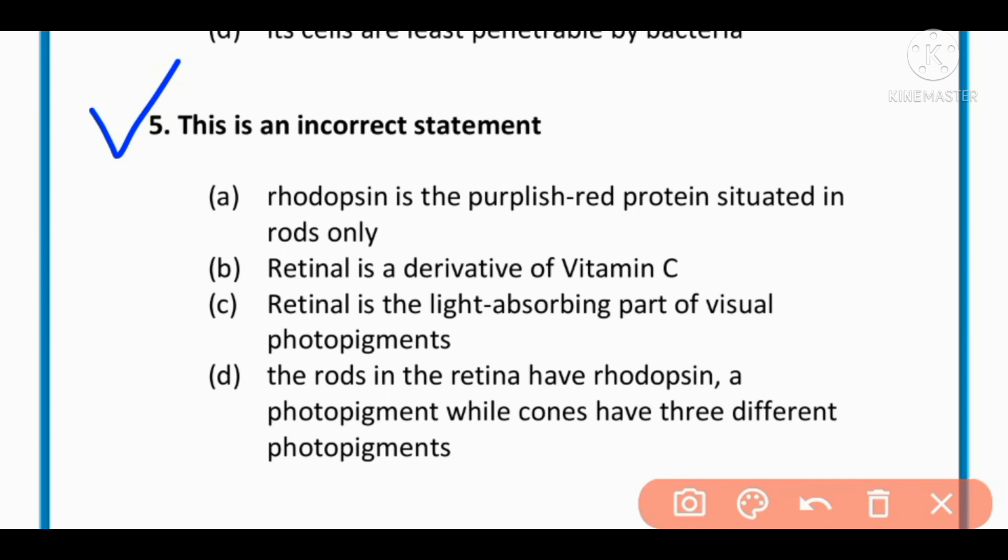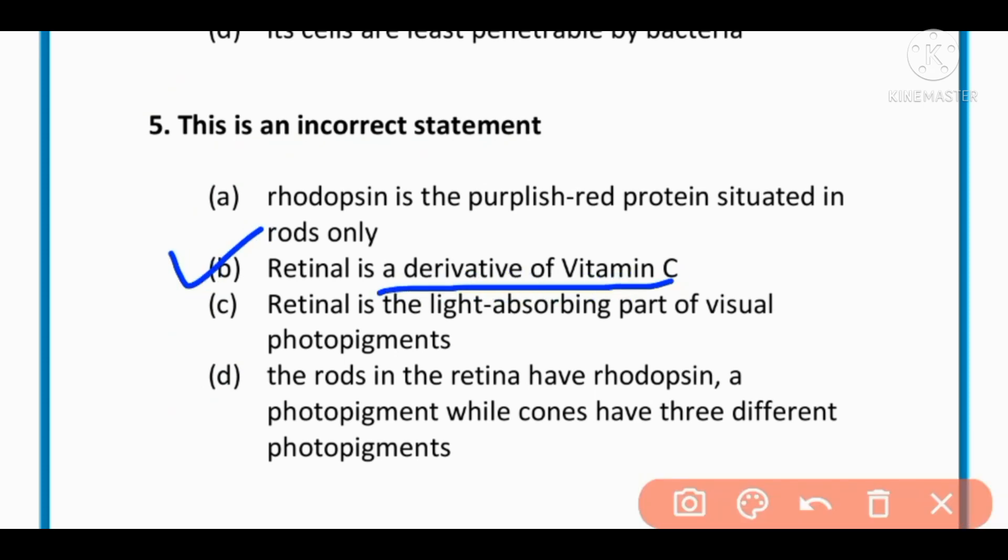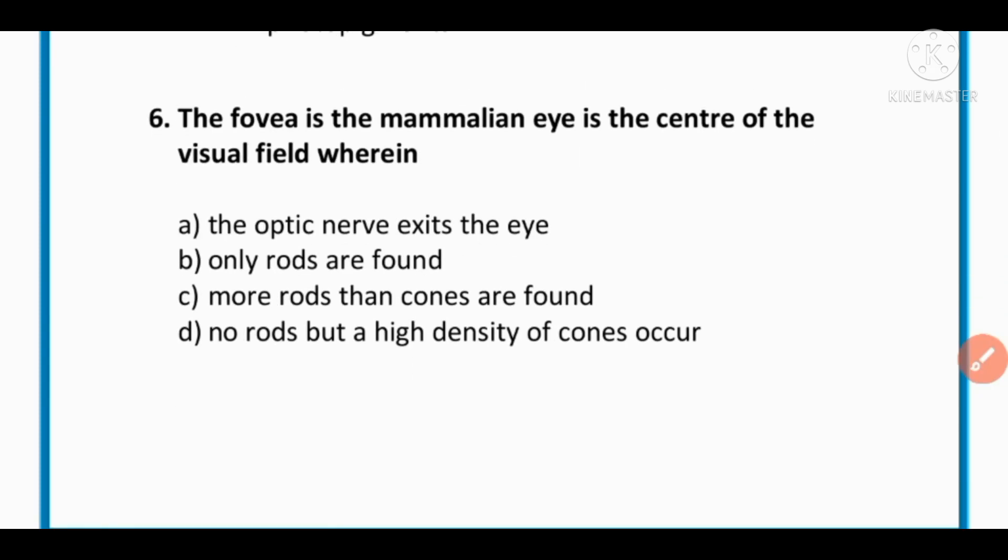MCQ number 5: This is an incorrect statement. (a) Rhodopsin is a purplish red protein situated in rods only. (b) Retinol is a derivative of vitamin C. (c) Retinol is a light absorbing part of the photopigments. (d) The rods in the retina have rhodopsin photopigments while cones have 3 different photopigments. The correct option is B: Retinol is a derivative of vitamin C. This is the incorrect statement.